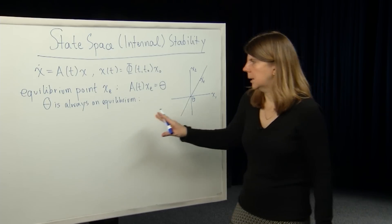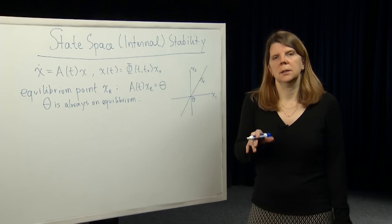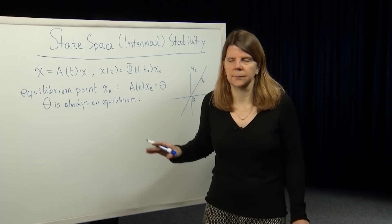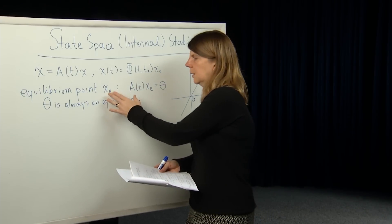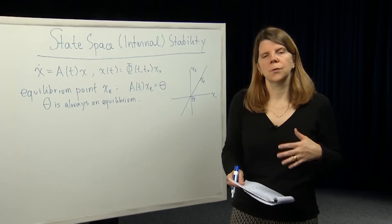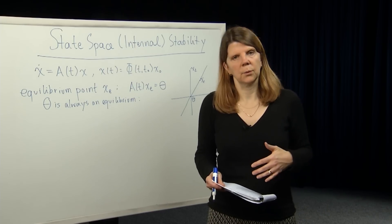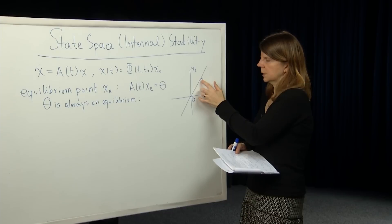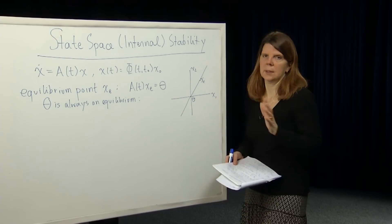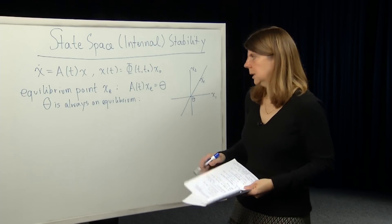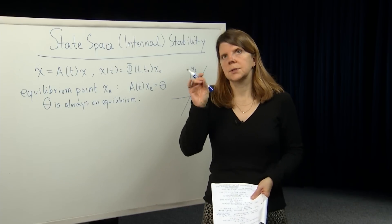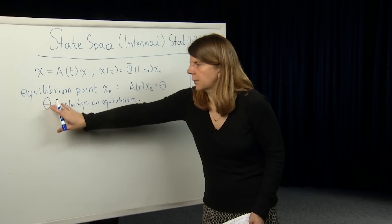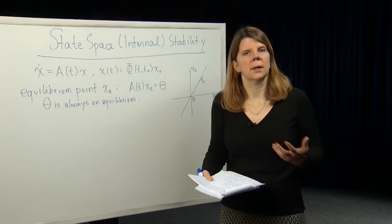Generally, we talk about the equilibrium at zero and stability of that equilibrium. We could also talk about stability of a line of equilibria. Where it becomes important to differentiate is more for non-linear systems, where you could have multiple isolated equilibria — you can never have an isolated equilibrium of a linear system away from zero. In non-linear systems, the system could be stable with respect to one equilibrium and unstable with respect to another. In linear systems, we typically say, without loss of generality, the equilibrium point is at zero.